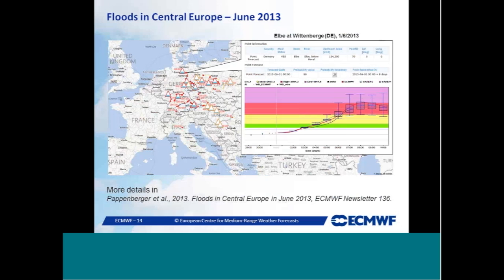Another example is the Central Europe floods of June 2013. For the Elbe at Wittenbergen, EFAS provided a very good signal about eight to nine days before the flood peak, both quantitatively and in terms of timing. The situation was also severe in the Danube river basin, especially the upper part. More details can be found in a publication by Pappenberger et al. in the ECMWF newsletter.